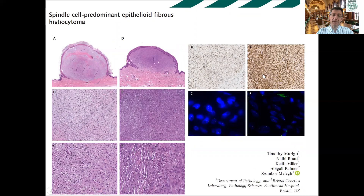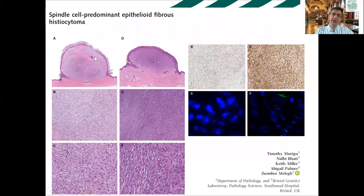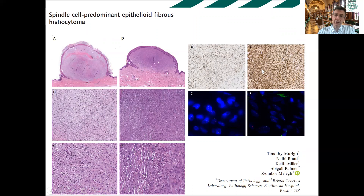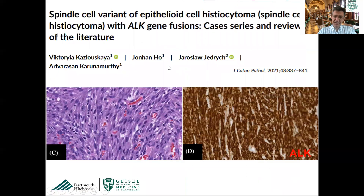When we describe a tumor with morphologic terms, as we study it more, the morphologic spectrum becomes pretty wide. The name sticks and doesn't reflect the morphologic heterogeneity. Epithelioid fibrous histiocytomas can be spindle-predominant or completely spindle — something to think about when you see a lesion with a fibro-histiocytic look. But they are all ALK-positive, ALK-rearranged. There's a recent series this month on the spindle-cell variant of epithelioid histiocytoma — a linguistic oxymoron, but that's what happens when morphologic terms don't reflect a tumor's full variety.